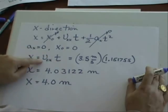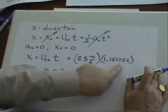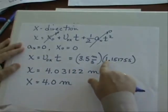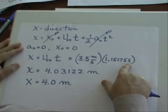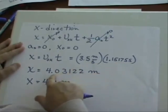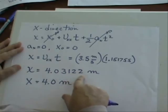V naught x was given. That's how fast the tiger jumped off the rock at 3.5 meters per second. And t, we calculated from the previous time, it's 1.15175 seconds. That's how long it was in the air. If I multiply those together, I get x equals 4.03122 meters.